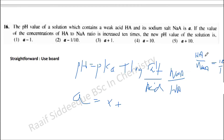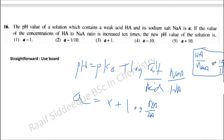When you plug it into the equation, it's log of NaA over HA — that's the reciprocal. They have increased HA over NaA 10 times, which means NaA over HA is 1 over 10, which is 0.1, or 10 to the power of minus 1. So the log term equals minus 1.